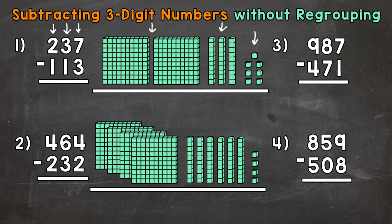Now we're ready to subtract. When we subtract whole numbers, we start with the ones place. So we have seven ones minus three ones. Let's subtract or take away three ones — one, two, three. How many do we have left? One, two, three, four. So we put a four in the ones place in our answer.